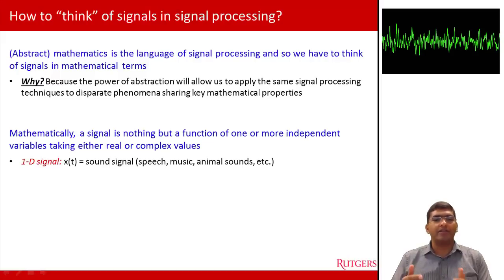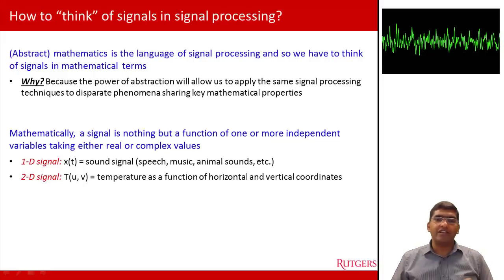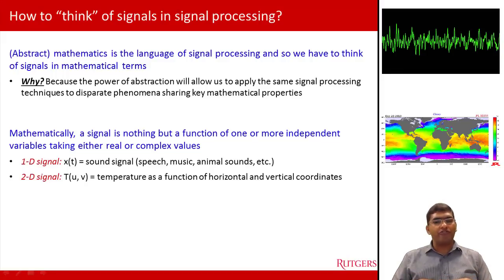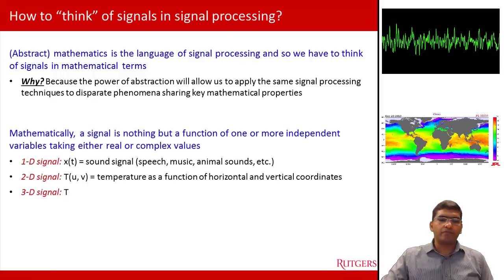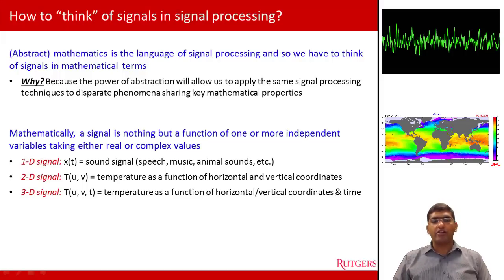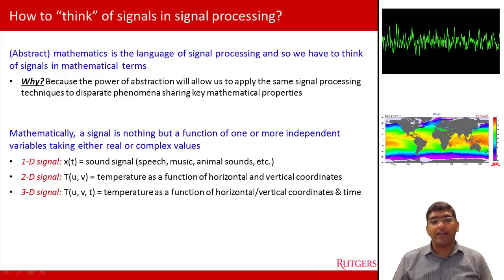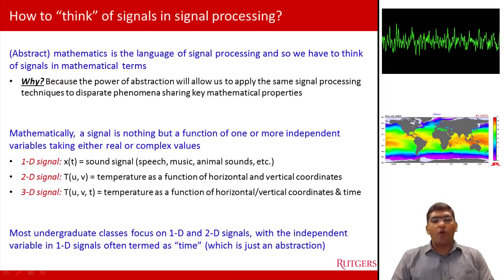You can also talk about 2D signals — functions of two independent variables. For example, you can think of temperature as a function of horizontal and vertical coordinates in a room. You can also think of 3D signals: temperature as a function of horizontal and vertical coordinates on the surface of the Earth in some region like the United States, also tracked as a function of time — giving you three variables: longitude, latitude, and time. Most undergraduate classes focus only on 1D or 2D signals.